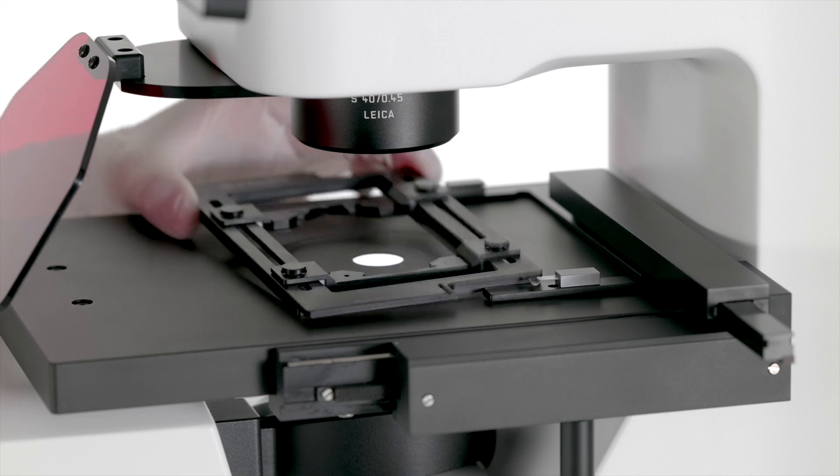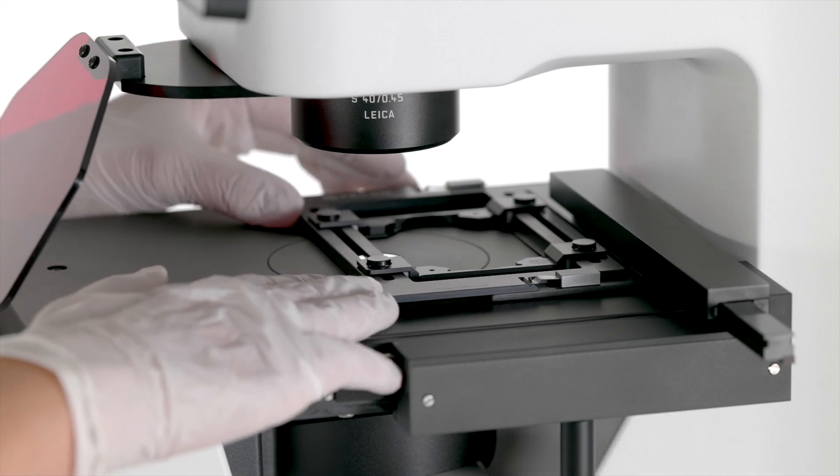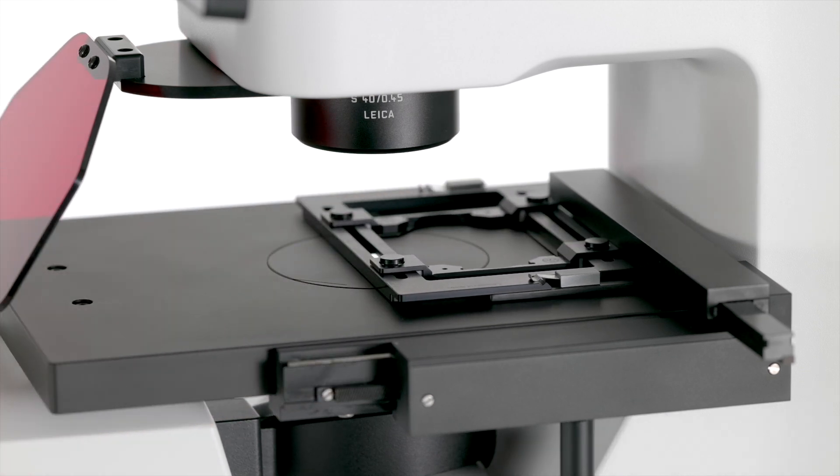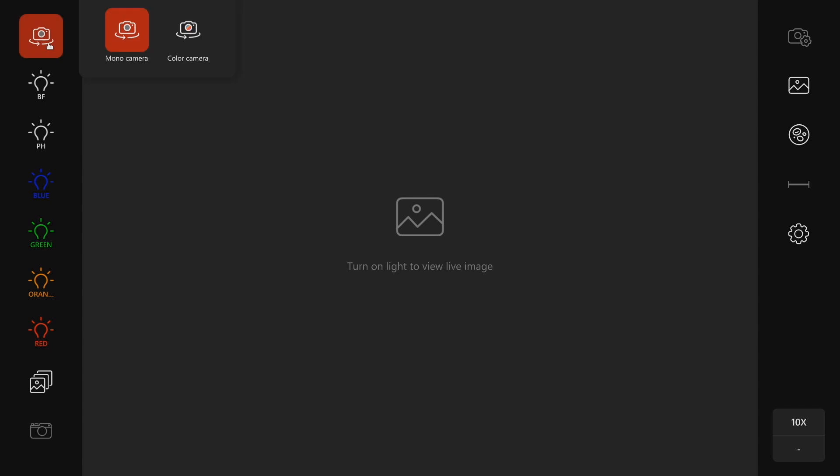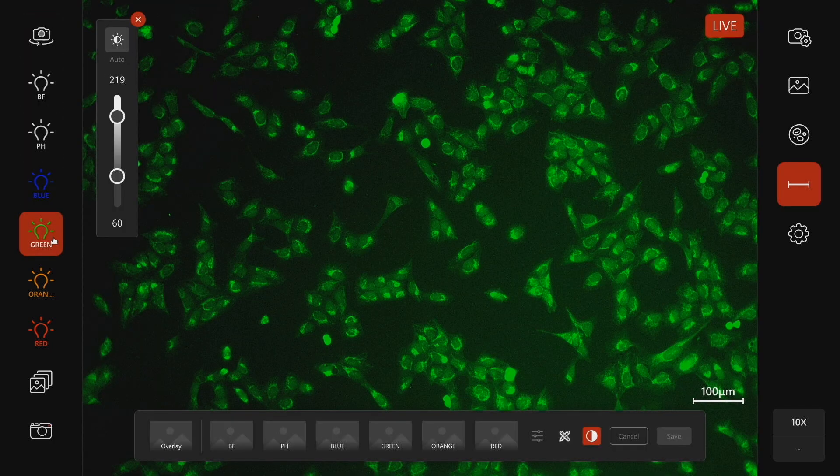To install the holding frame, just clip it into the holder and it's ready to go. Select your desired camera and channel from the main screen and Mateo FL is ready for your first experiment.